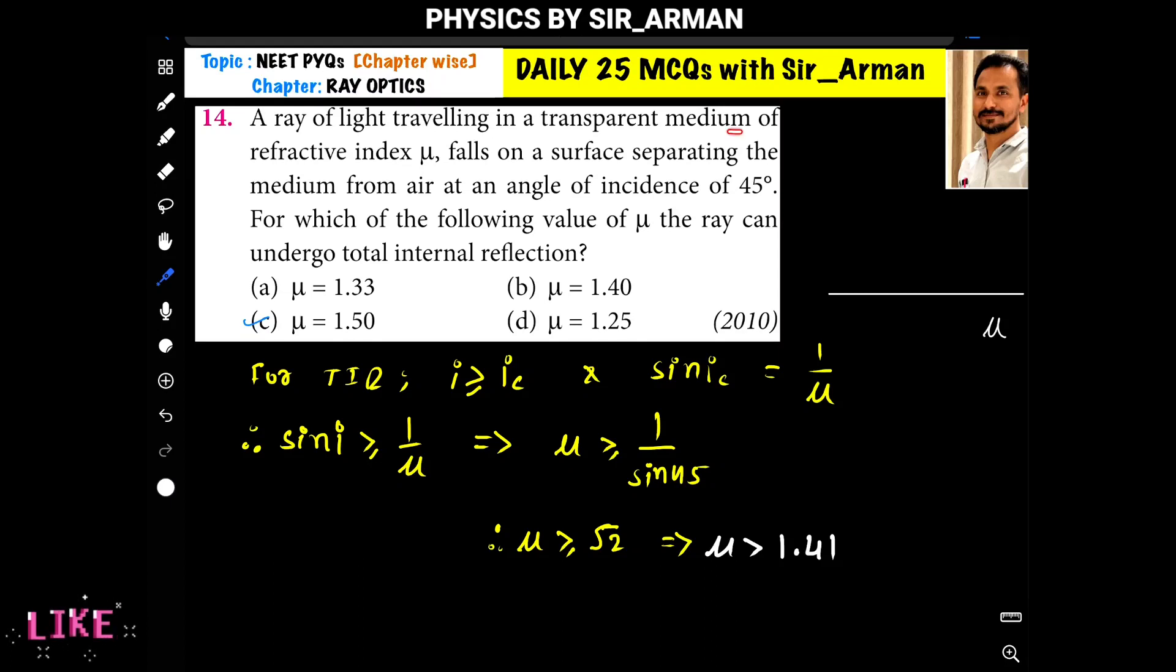A ray of light traveling in a transparent medium of refractive index μ falls on a surface separating the medium from air. The angle of incidence is 45 degrees - it is incident such that it makes a 45-degree angle here.